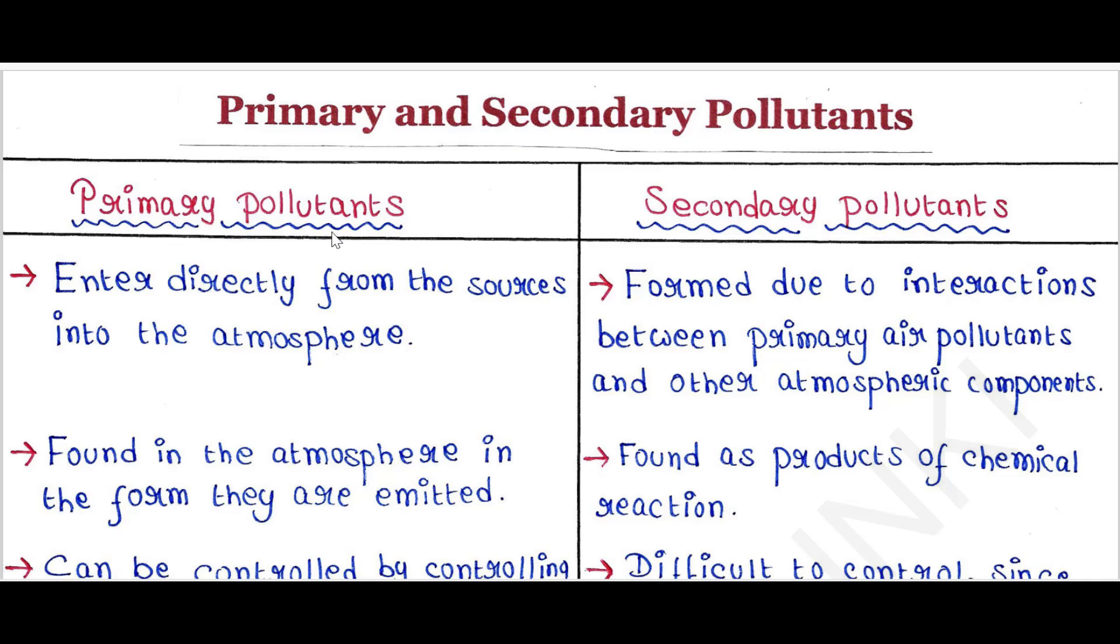Primary pollutants enter directly from the sources into the atmosphere. Secondary pollutants are formed due to interactions between primary air pollutants and other atmospheric components.